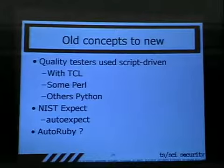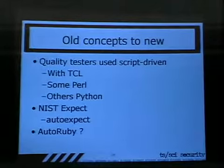The old concepts are new again — everything used to be script-driven in the 80s and 90s. The first quality testing language I used was Tcl. NIST came out with an extension to Tcl called Expect, which was used for a lot of quality testing. It shipped with a program called Auto Expect, which basically wrote the code for you — a really cool way of programming. We've since moved away from script-driven quality testing toward newer approaches.